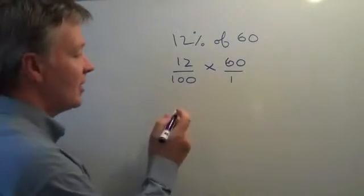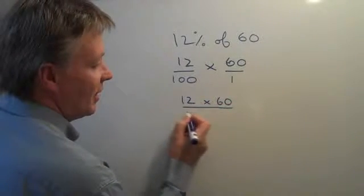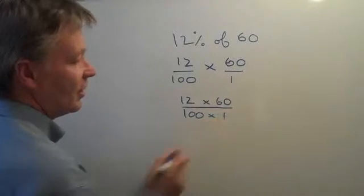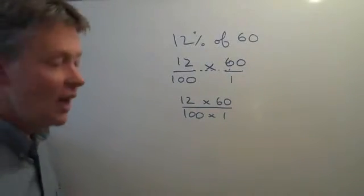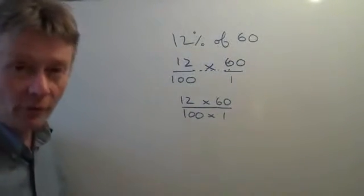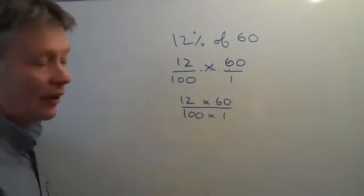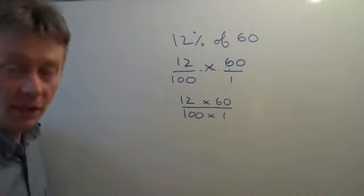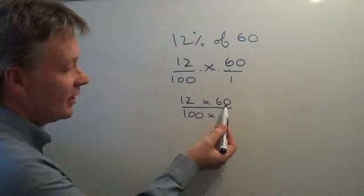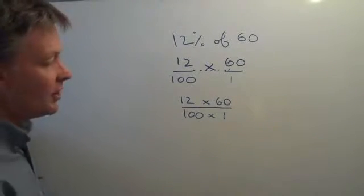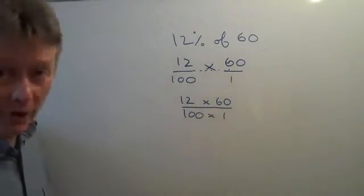So if I'm going to rewrite it, I could rewrite it as 12 times 60 divided by 100 times 1. I've extended this line across. Now with any fraction, whatever you do to the top, you also need to do to the bottom. So I can find a way to make these numbers smaller and easier to deal with. Here I have 60 and here I have 100. So I'm going to divide the top and the bottom of this fraction by 10.